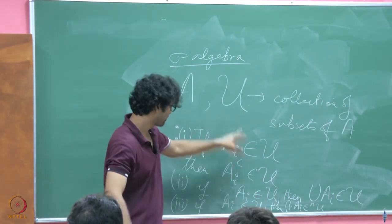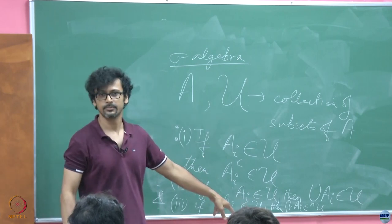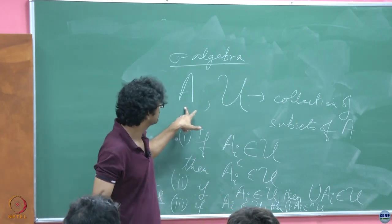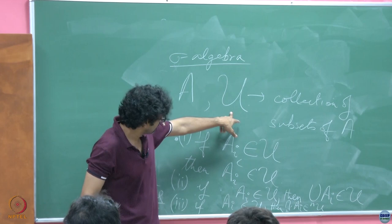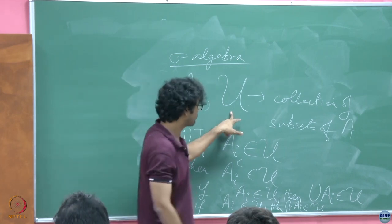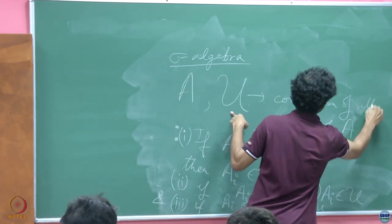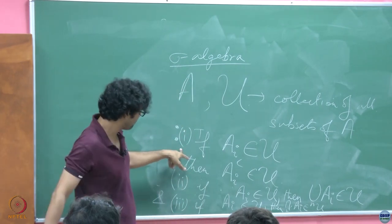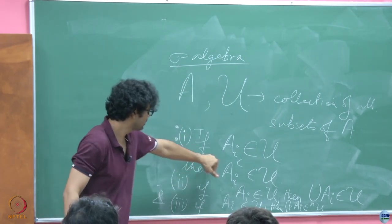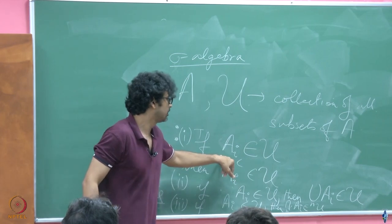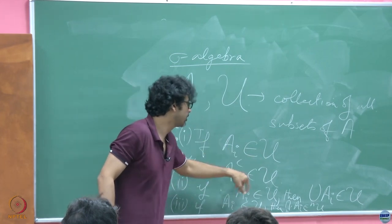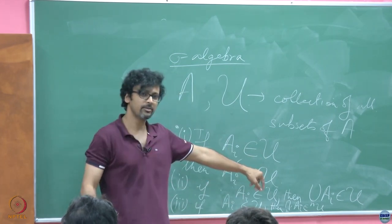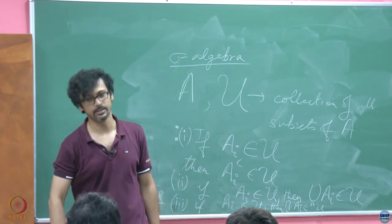The point is that there is a set of rules. So if you have a set and you cook up the collection of all subsets, collection of all subsets of A, and then if they follow this rule such that if the set A_i comes from this union, the complement must also come from there. By the way, this is not a very trivial operation complementation, is it?